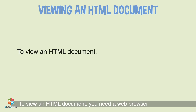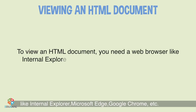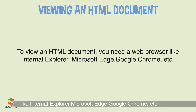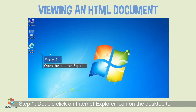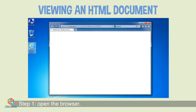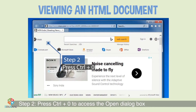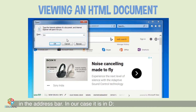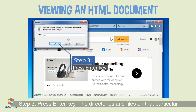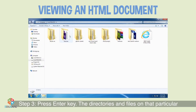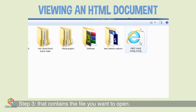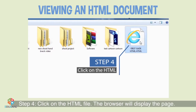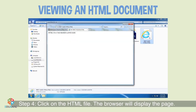Viewing an HTML Document: To view an HTML document you need a web browser like Internet Explorer, Microsoft Edge, or Google Chrome. Step 1 — Double-click on the Internet Explorer icon on the desktop to open the browser. Step 2 — Press Ctrl+O to access the Open dialog box, or enter the drive letter where your HTML file is present in the address bar. Step 3 — Press the Enter key; the directories and files on that drive will be displayed; navigate to the directory containing the file. Step 4 — Click on the HTML file and the browser will display the page.